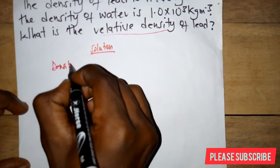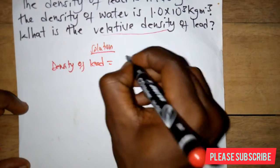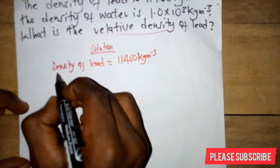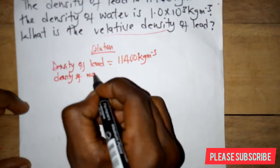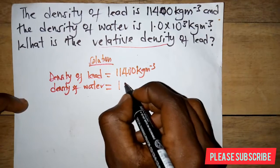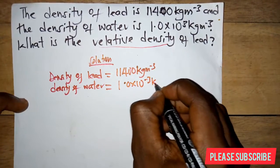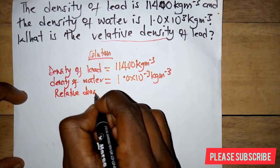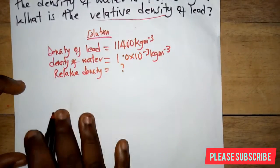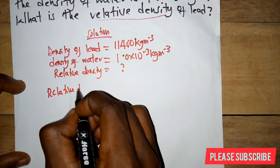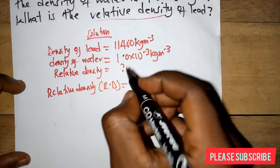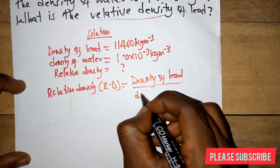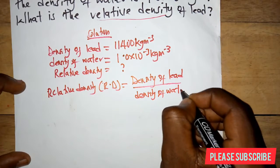So we have the density of lead as 11,400 kilograms per meter cube, and we have the density of water. Our relative density is what we are looking for. Relative density is the ratio of the density of a substance — in this case, lead — to that of the density of water.